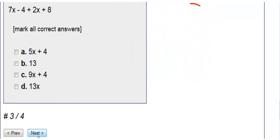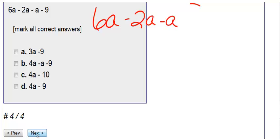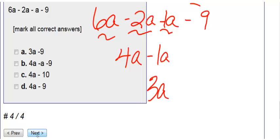Okay, lastly, number 4 here. We have 6A minus 2A minus A minus 9. Remember, if there's no number there, it's like a 1. So I'm going to combine all these A's. 6A minus 2A is 4A. I still have this minus 1A, so 4A minus 1A is 3A. And then I can't combine this with anything else, so I have minus 9. So my answer is 3A minus 9, which is choice A.